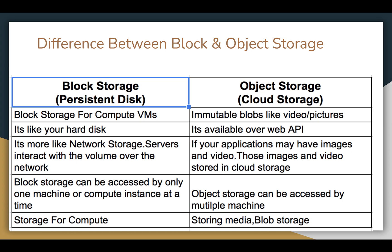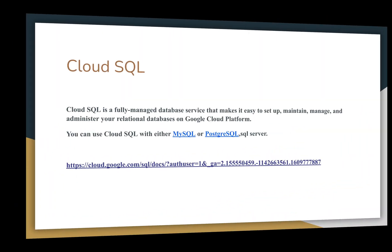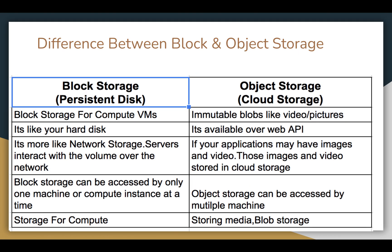Block storage is like your hard disk, while object storage is available over a web API. Block storage is more like network storage where servers interact with the volume over the network. Object storage is where your application's images and videos are stored in Cloud Storage. Block storage can be accessed by only one compute instance at a time, whereas object storage can be accessed by multiple instances. In summary, block storage is for compute and object storage is for media and blob storage.